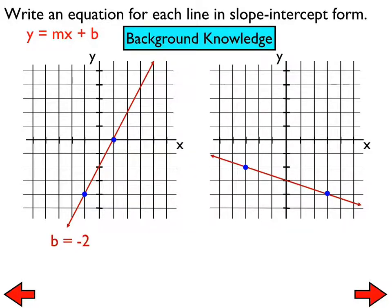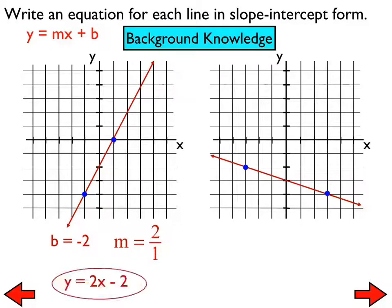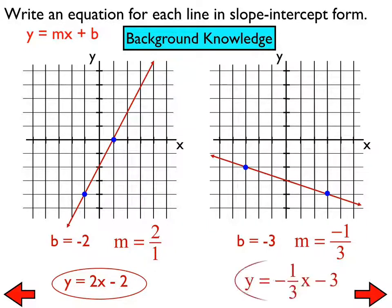The graph on the left has a y-intercept of negative 2 and a slope of rise 4, run 2 — or rise 2, run 1. The equation is y equals 2x minus 2. The one on the right has a y-intercept of negative 3 and a slope of negative one-third. The equation is y equals negative one-third x minus 3.